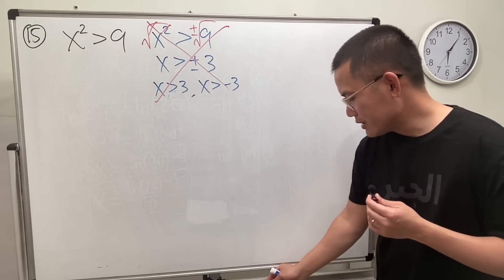Now pick a number bigger than three, let's say four. Put it here, positive. Put it here, positive. Of course it's positive, so we are going to take this region. So this is the safe way to do it.